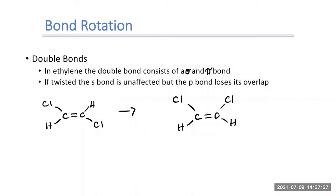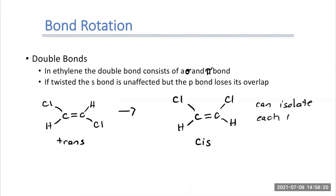The one where the chlorines are on opposite sides is what we call trans, because they're transverse to each other. The one where they're on the same side is what we call cis. You can actually isolate each isomer — they have different enough chemical and physical properties that we can actually isolate them.